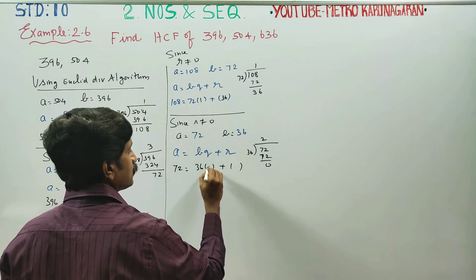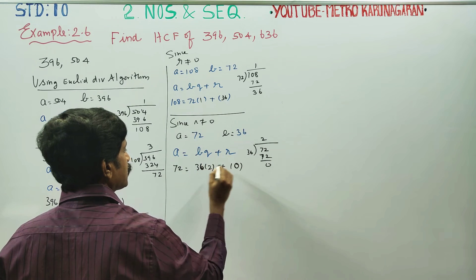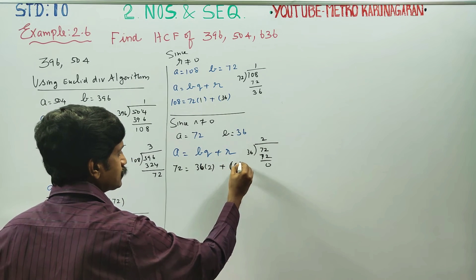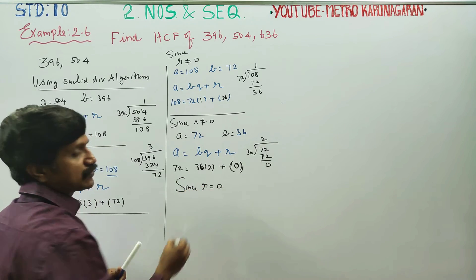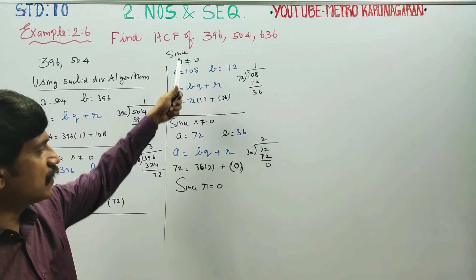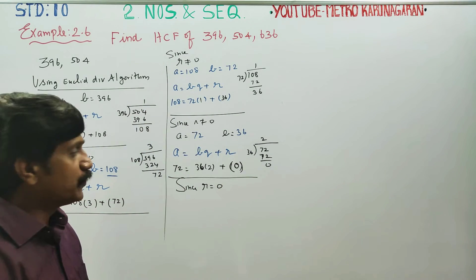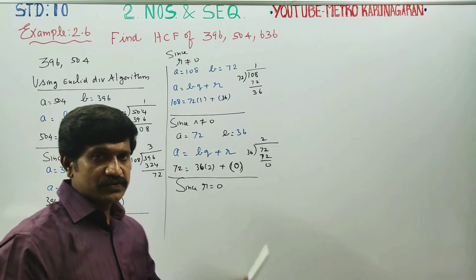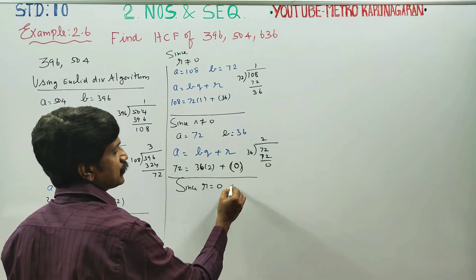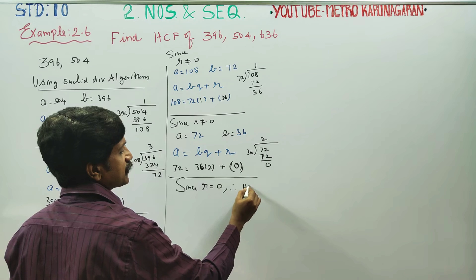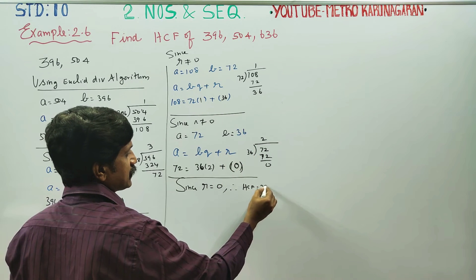We have reached remainder 0. Since remainder is equal to 0, the HCF of 396 and 504 is the last divisor, which is 36.